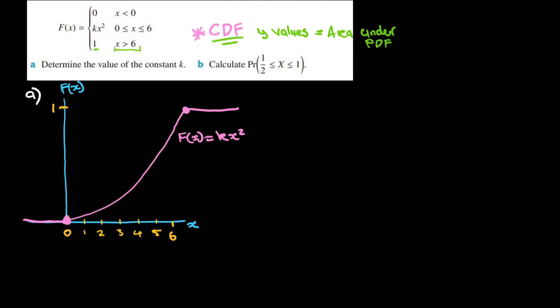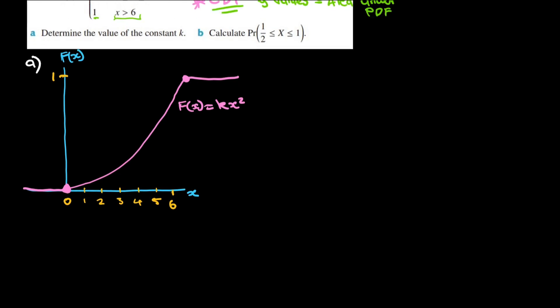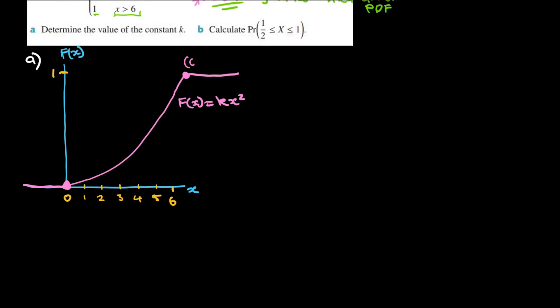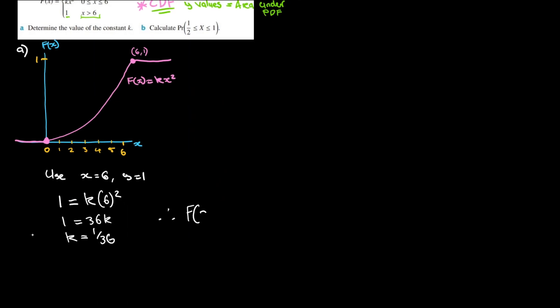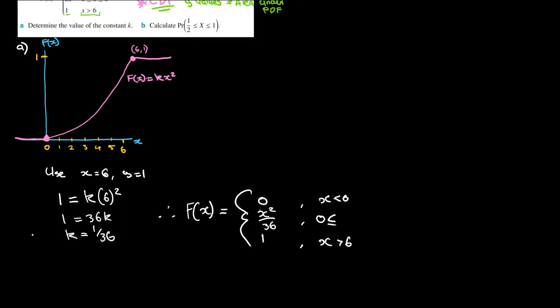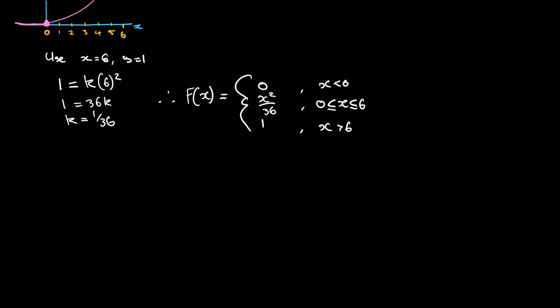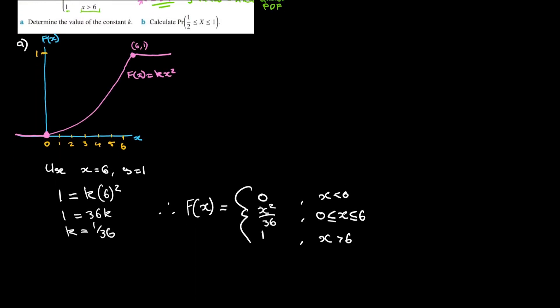I've got my sketch and I want to determine the value of k. The function has a parabolic relationship. I'll use the fact that I know a coordinate: when x is 6, y is 1. Substituting that in gives us the value of k, which is 1 over 36. Now we calculate the probability for x between a half and one.